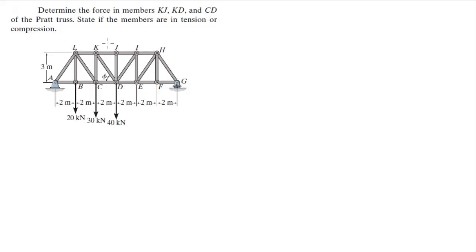What you want to do is you want to use the method of sections and cut it right in between the three members that they want you to find. Now what do I use? The left or the right side? Well the answer is we use the right side of the truss. Why do we use the right side?